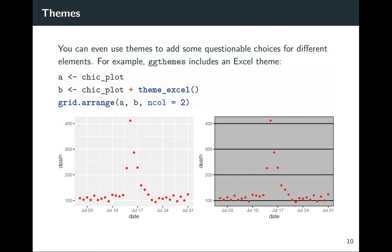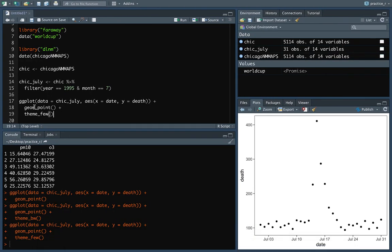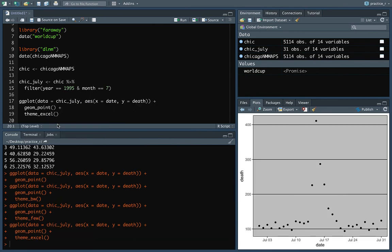You can even put in some themes that might be questionable choices. Like if you really want it to look like old school Excel, there is a theme_excel. I believe this is in ggthemes as well. And so you can put that in and you can have what things look like when you were in high school using Excel if you're of my age.